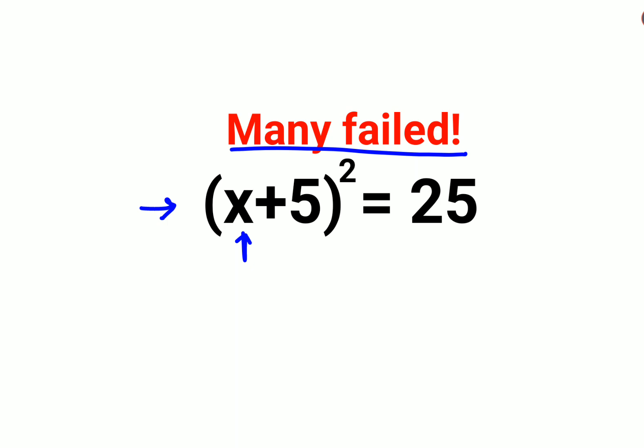The reason is that in this case there are two different answers. Why? Whenever you have a variable which is squared and it equals some value that's a perfect square, like 25 in this case.